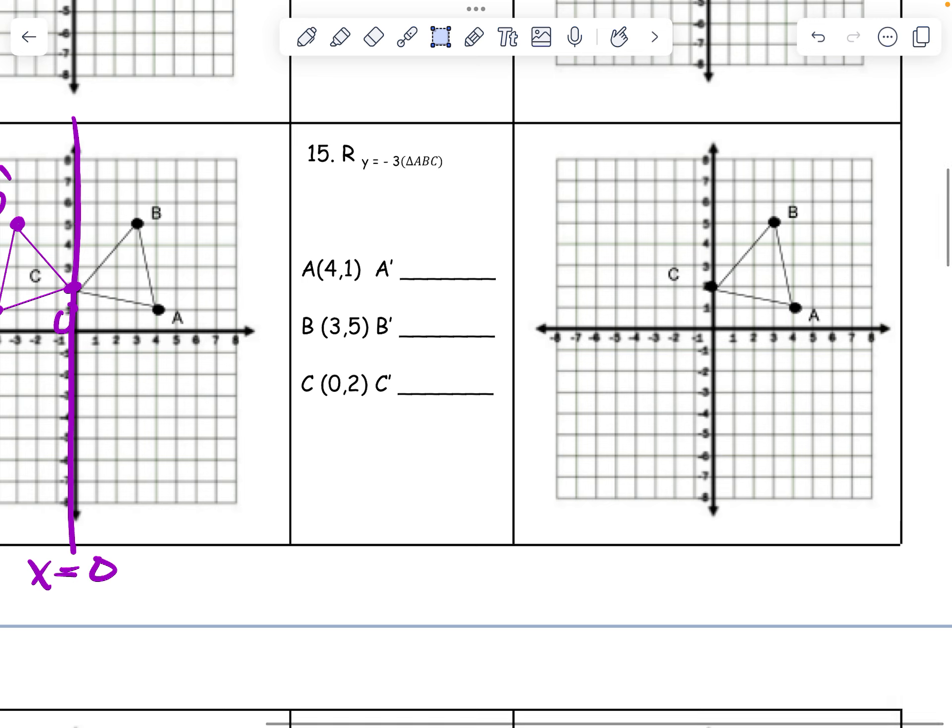So yours says y equals negative 1. That was my mistake. Okay, so y equals negative 1 right here. So when it's a y equals, the only thing we're changing is the y. So all my x's are going to stay the same.